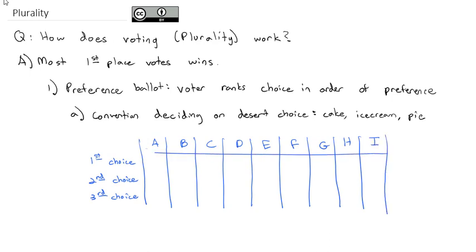All these people are going to rank their first, second, and third choices. Let's say A wants cake, then ice cream, then pie. B's first preference is ice cream, then cake, then pie. C wants ice cream, then pie, then cake. D wants cake, then ice cream, then pie.